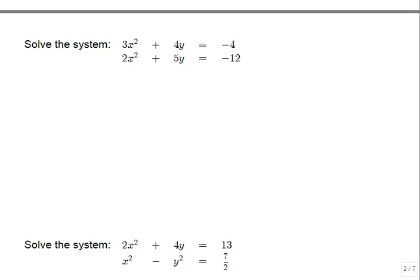Looking at the system, the x-squared terms are nicely lined up, the y terms are lined up, and the constants are lined up, so this is ideal for the elimination technique. Because those x-squareds have higher powers they're more difficult to deal with, but we can make their coefficients become opposites. With a 3 and a 2, we think of 6 as a common target—we multiply the top by 2 and the bottom by 3, making the bottom negative so the signs are opposite.